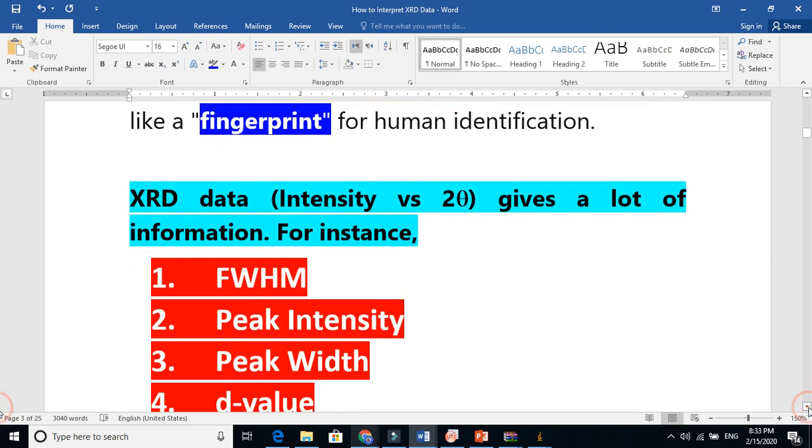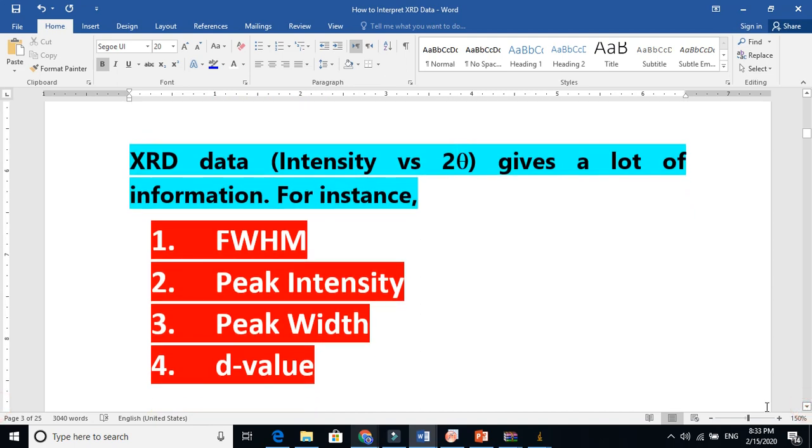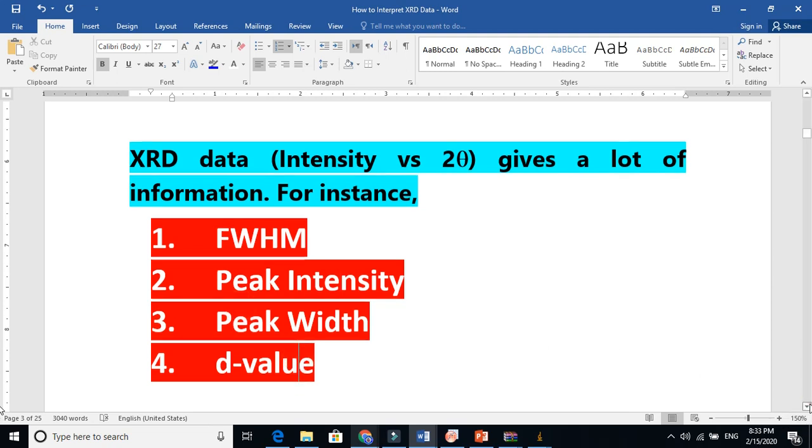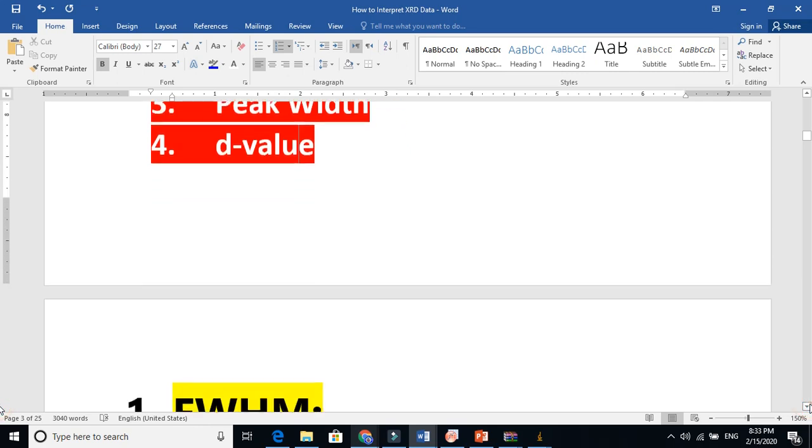XRD data is basically intensity versus 2 theta. It gives a lot of information. For instance, you must need to know what is full width at half maxima, what is the peak intensity. Why the peak intensity is higher in one case, why it is lower. Why would one plane have more peak intensity while the other plane has less. Peak width and the d-value. I will explain these things step by step in very good detail.